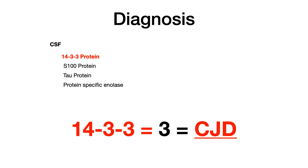CJD will often be differentiated on exams from other conditions that cause myoclonus. Consider the differential: subacute sclerosing panencephalitis, HIV-associated neurocognitive disorders, some types of viral encephalitis, juvenile myoclonic epilepsy, and serotonin syndrome. Ask yourself what the test writer would need to include to point you toward CJD specifically over these other diagnoses.